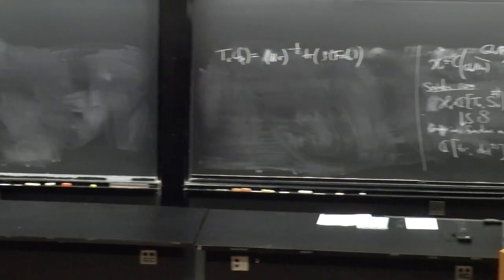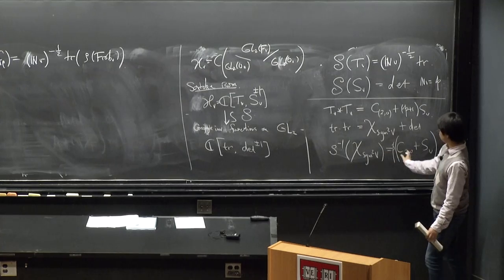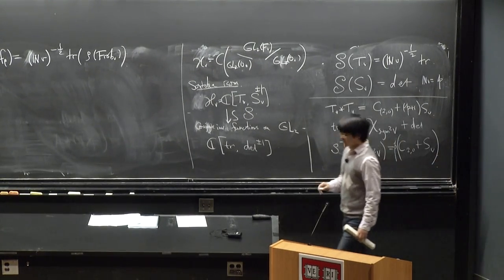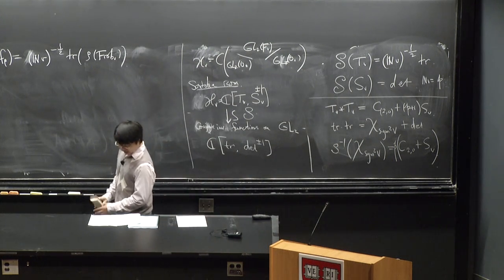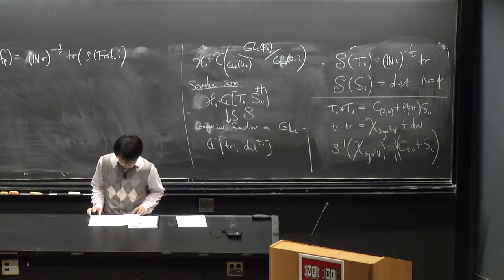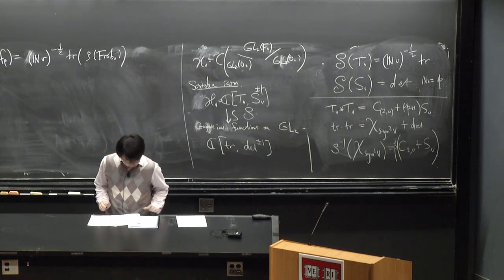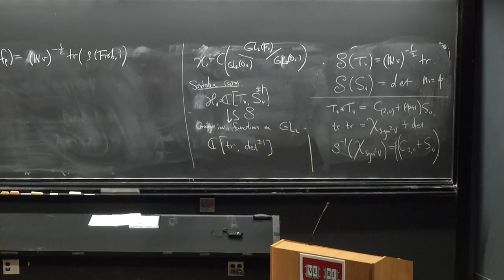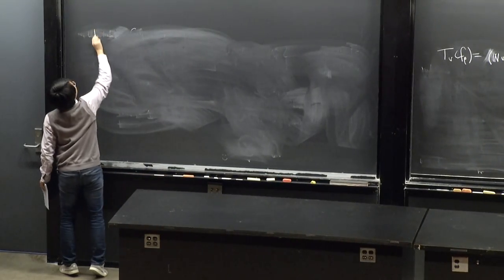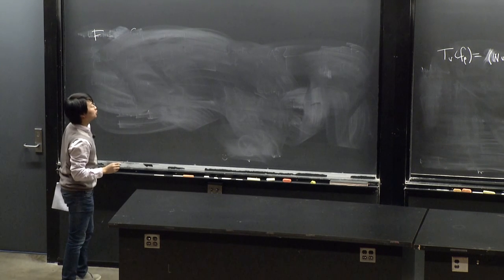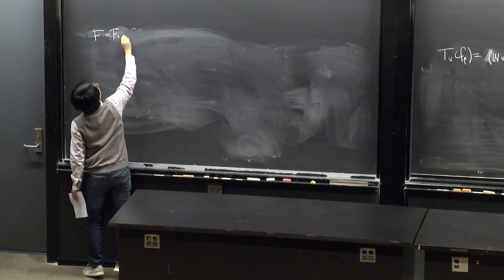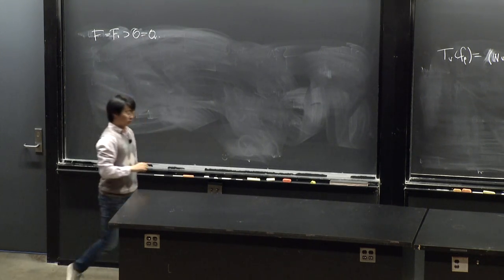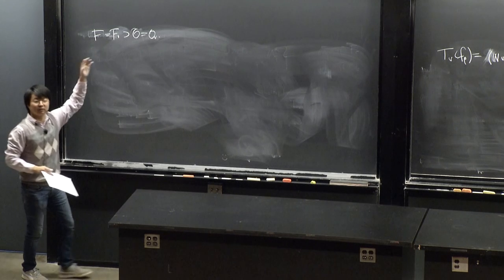Why does such an isomorphism exist, and how do we understand that it doesn't send basis to basis? It turns out there's something much deeper behind this. To start, let me make the following simple observation, and now move to the local field setting, so F is just F_v and 𝒪 is just 𝒪_v.